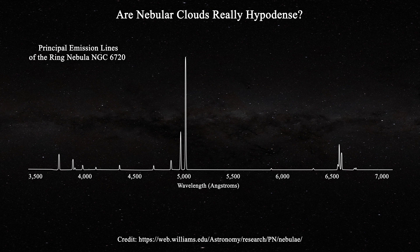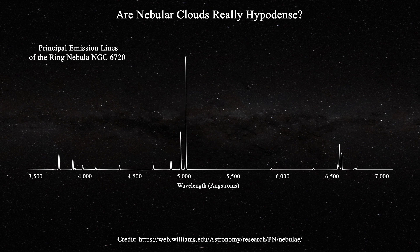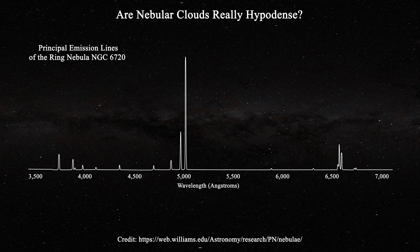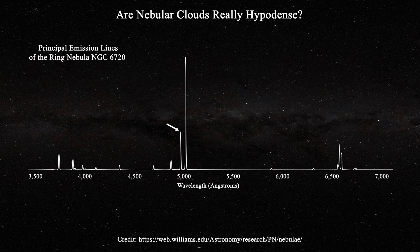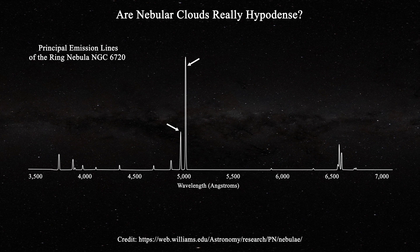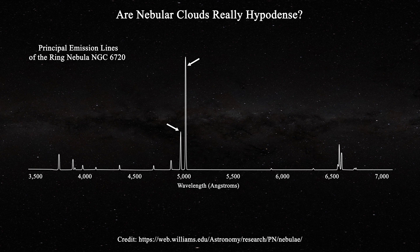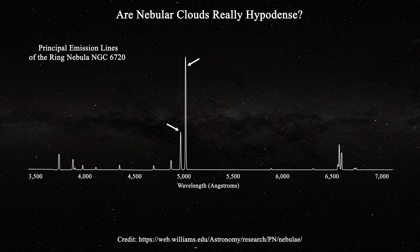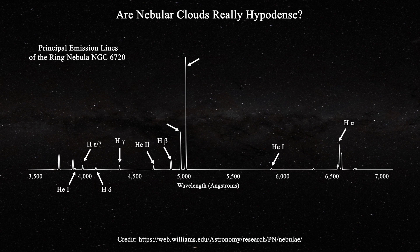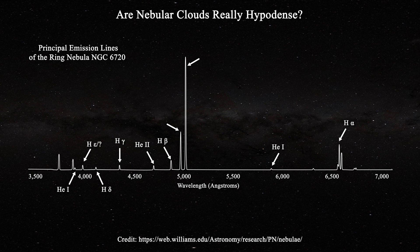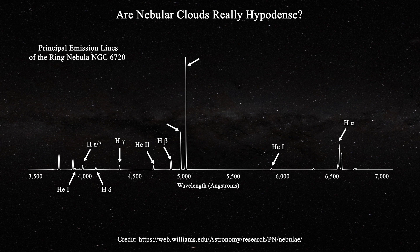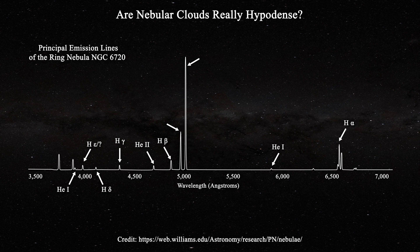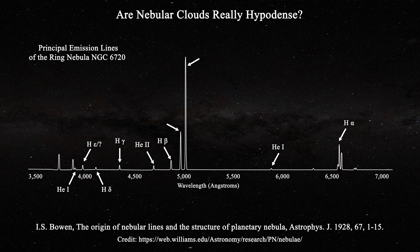When astronomers first analyzed nebular spectra, they were confronted with the problem that they could not identify many of its spectral lines. There were very powerful lines at 495.9 and 500.7 nanometers, for instance, which were completely beyond understanding at the beginning of the 20th century. The lines that could be identified were associated with relatively light atoms — hydrogen and helium. Consequently, Henry Norris Russell first advanced the idea that the nebular lines must originate as a result of conditions much different than typically found in the laboratory, as Bowen outlines in his classic paper.